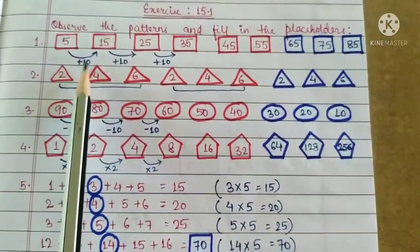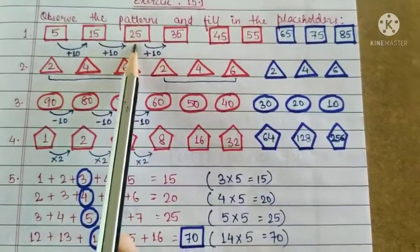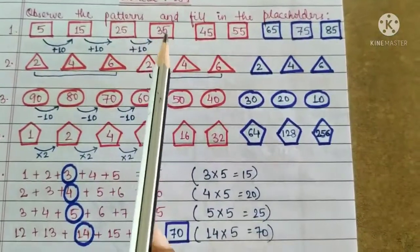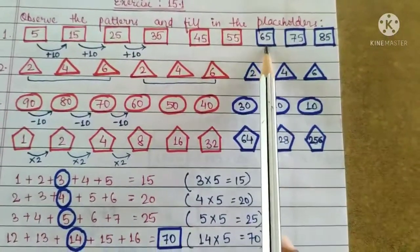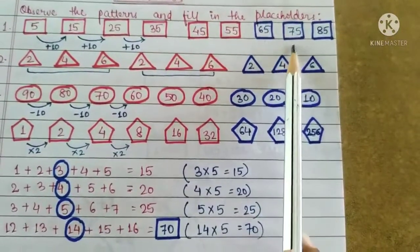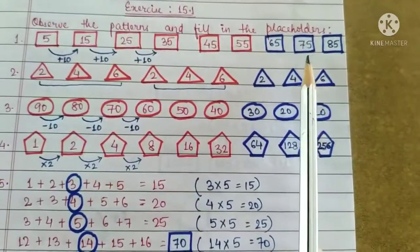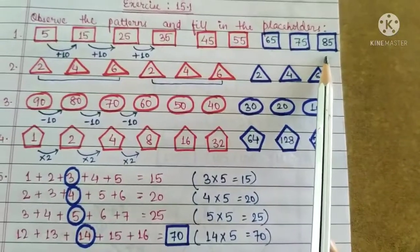That is, 5 plus 10 is 15. 15 plus 10 is 25. 25 plus 10 is 35 and so on. So the next numbers will be 55 plus 10 is 65. 65 plus 10 is 75. 75 plus 10 is 85.